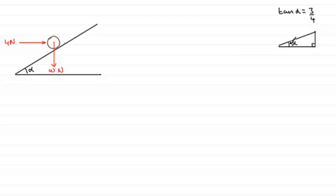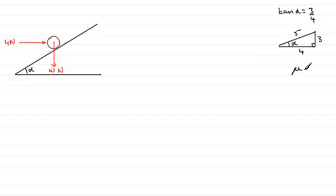Tan is opposite over adjacent, so that represents three units to every four — this is a familiar 3-4-5 triangle by Pythagoras' theorem. So cos alpha equals adjacent over hypotenuse, which is four fifths, and sine alpha equals opposite over hypotenuse, three fifths. That saves an awful lot of work. We're also told that the coefficient of friction, mu, is equal to one half.